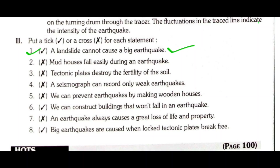True/False section: A landslide cannot cause a big earthquake — True. Mud houses fall easily during an earthquake — True. Tectonic plates destroy the fertility of the soil — False. The seismograph can record only weak earthquakes — False. We can prevent earthquakes by making wooden houses — False. We can construct buildings that won't fall in an earthquake — True. An earthquake always causes a great loss of life and property — False. Big earthquakes are caused when locked tectonic plates break free — True.